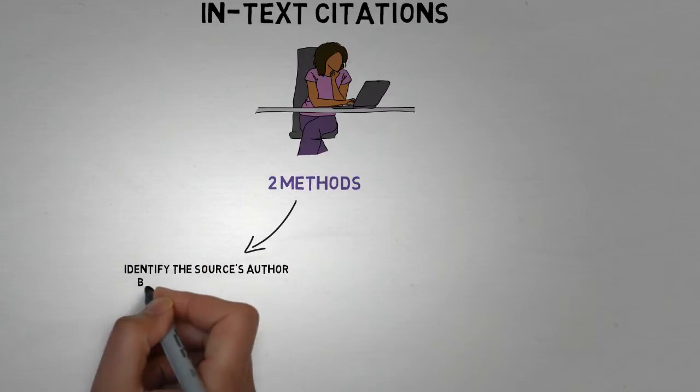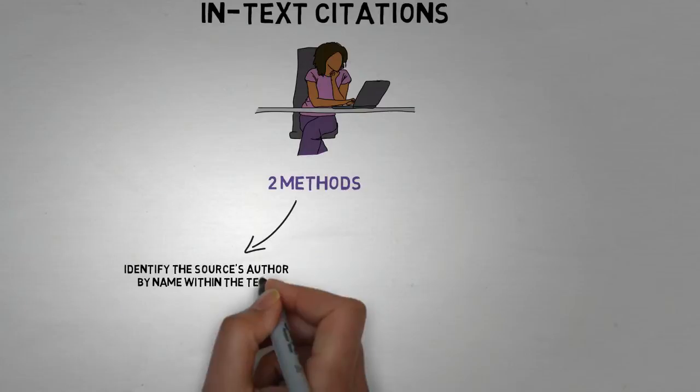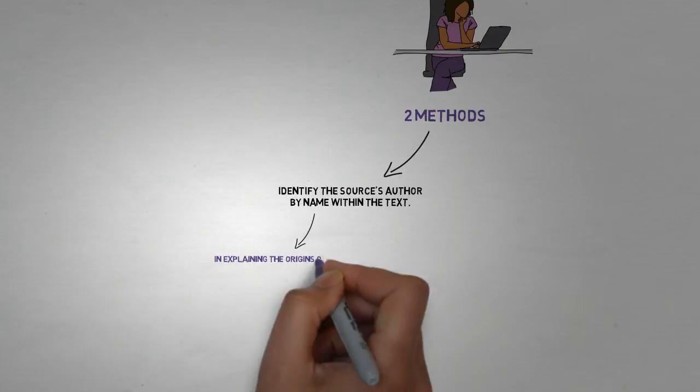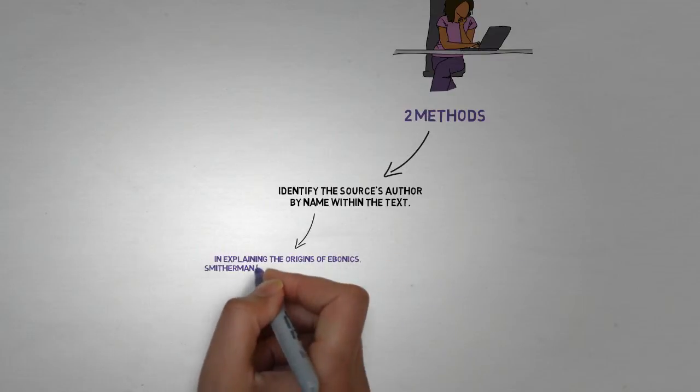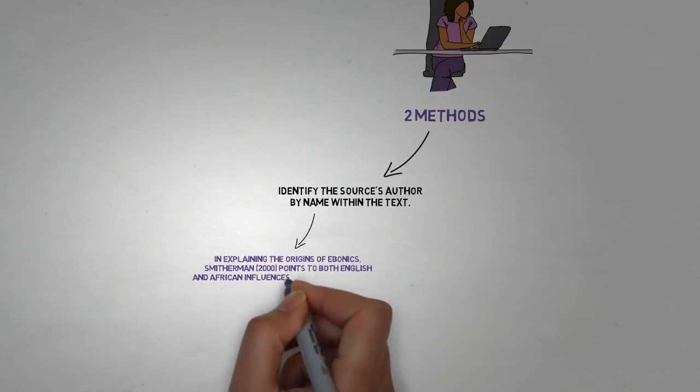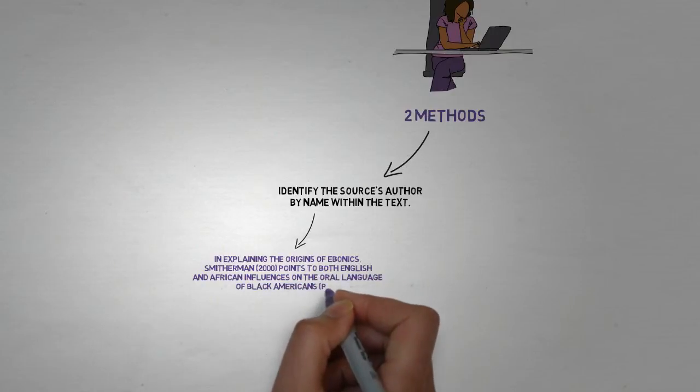The first option is to name the author within the sentence itself. As this example shows, the author is credited within the sentence. Note that APA calls for the date of publication to follow the author name, as well as the page number in parentheses following the sentence.